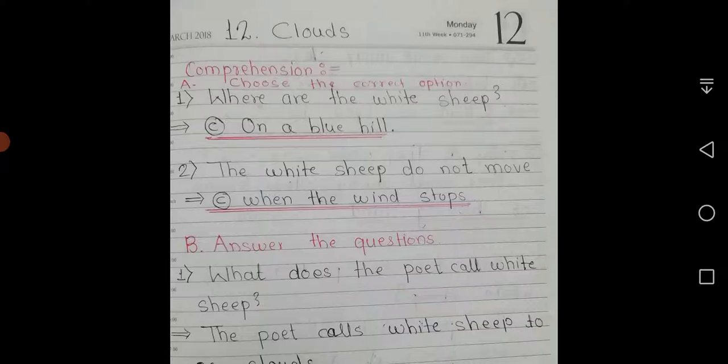First, where are the white sheep? And answer is C, on a blue hill.